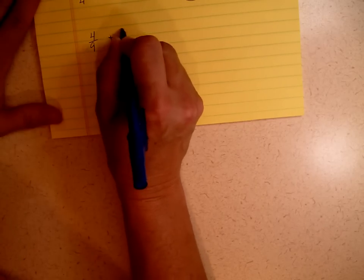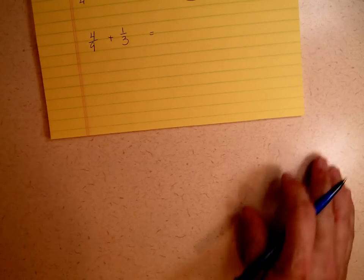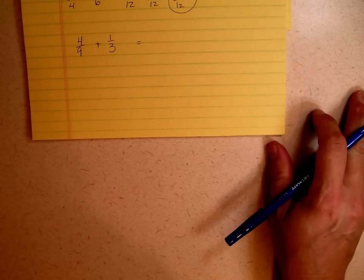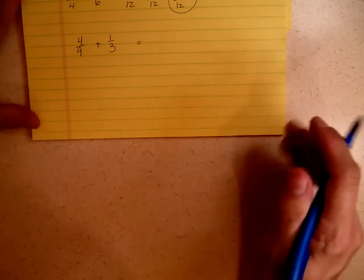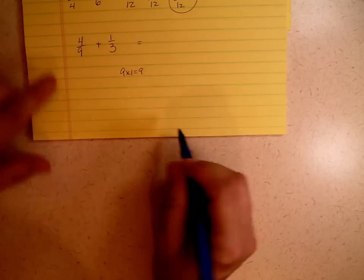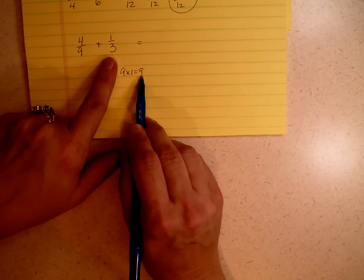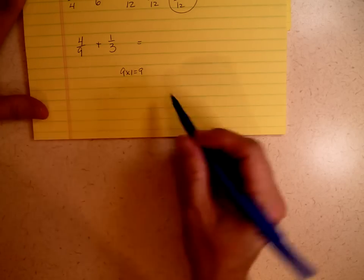And let's try one more problem, just to make sure you've got it. Four-ninths plus one-third. Go ahead and find the least common denominator for nine and three. Oh, you already found it. That was really quick. Nine times one is nine. If I divide nine by three, do I get a whole number? Absolutely. So that means my least common denominator is nine.